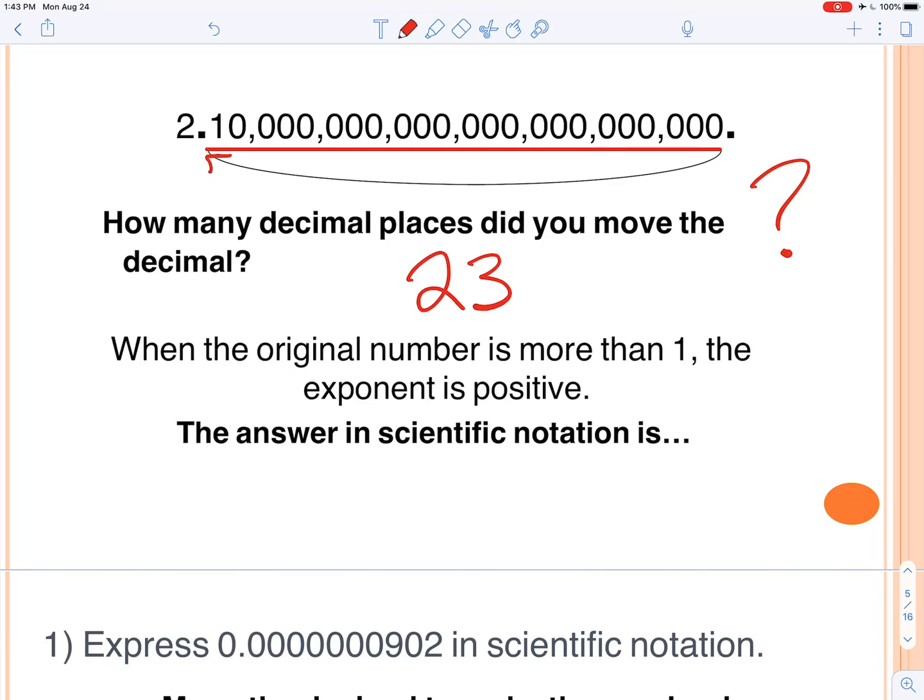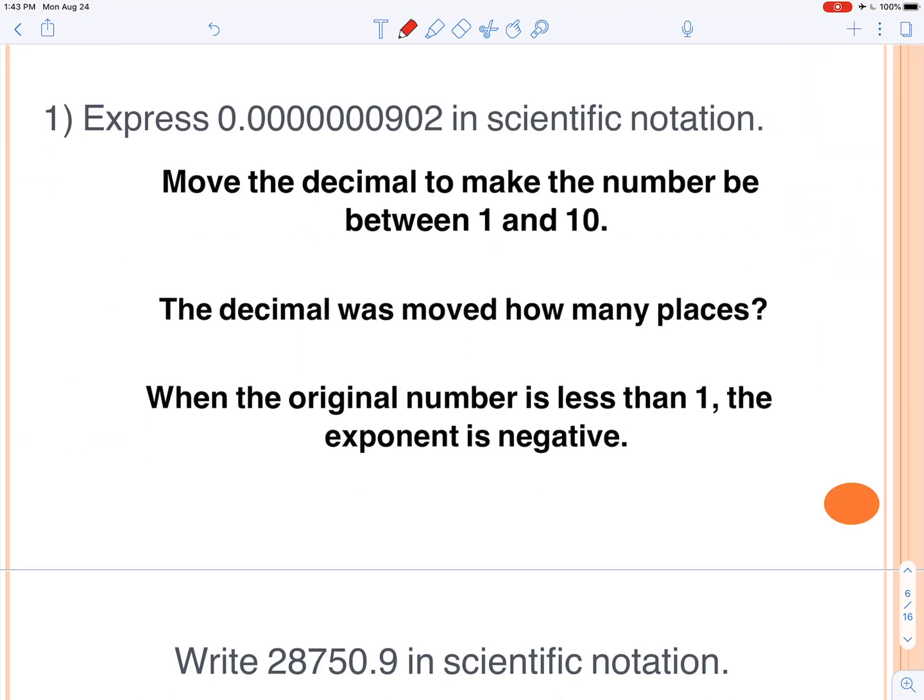Now we want to express this in scientific notation. So we're going to take that. How about you try to figure this one out? All right, so we take that first part that's between 1 and 10, the 2.1, multiplied by 10, and then the exponent is just how many places we move the decimal. So that's going to be our answer here.